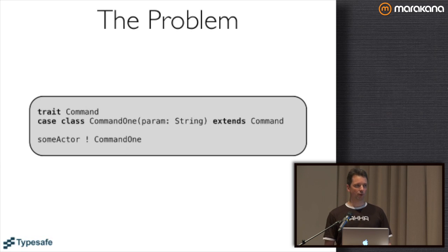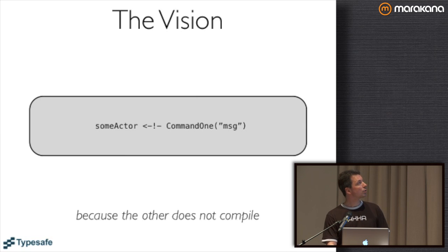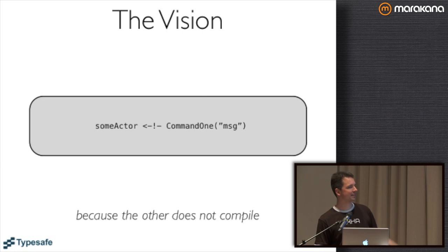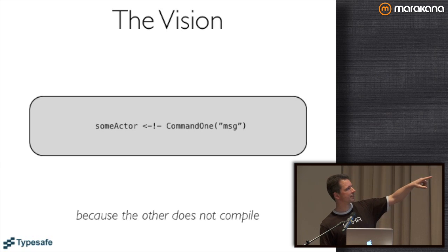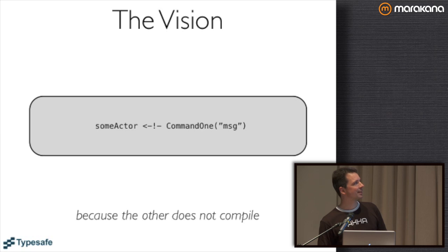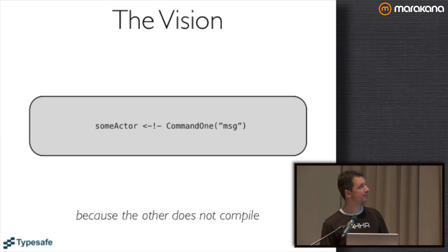And the compiler cannot warn about this. The compiler cannot help you with this and flag it as an error as of now with untyped actors, because the bang operator or the tell method takes Any as a message. So what we'd like to have is some kind of operation. I'm using this fancy left-pointing arrow just because I didn't know anything better up to now. This sends the message on the right to the actor on the left, and the compiler will actually yell at you if you try to use the companion object. That is the idea - that the compiler forces you to do the right thing.